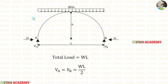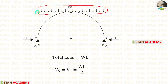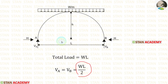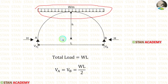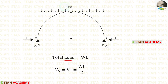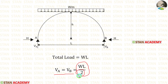Now let us calculate the vertical reactions. This arch has symmetrical loading conditions, so we can easily calculate the vertical reactions. You can see that the UDL is acting symmetrically for the full span of the arch. The vertical reactions will be equal to the total load divided by 2. The total load is equal to WL, because when the UDL is acting, we multiply the load with the distance. So VA equals VB equals WL by 2.